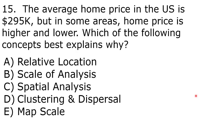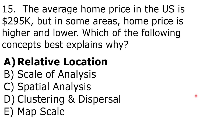The correct answer is A, relative location. House prices change based on location. Houses are more expensive in urban areas and cheaper in suburbs; they're also more expensive on the coastline than inland. In the US, the average home price is $295,000, but on the eastern coast of Florida prices can be in the millions. In Missouri or North Mississippi, prices may be at or below $295,000. Scale of analysis doesn't determine this — even within a county like Miami-Dade, prices vary based on proximity to the coast.